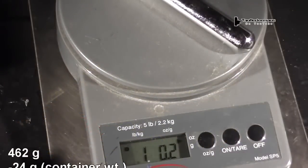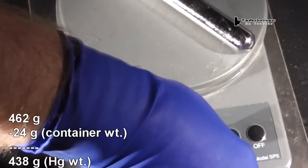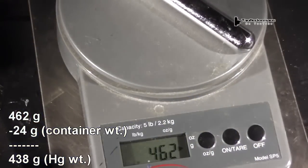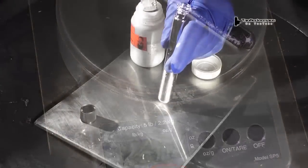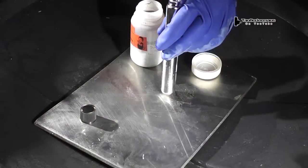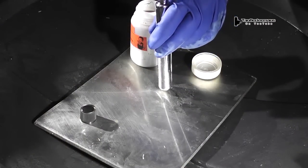So we have a total of 462 grams minus the 24 gram tare weight, giving us 438 grams, which is just under that 455.5 grams minimum order you can buy.